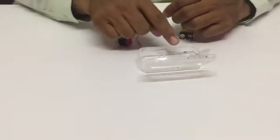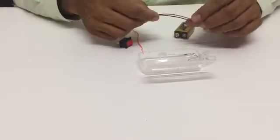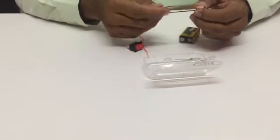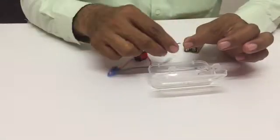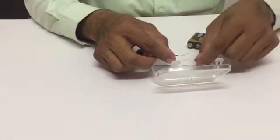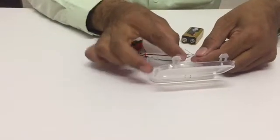After connecting the resistor to the bigger terminal of the LED, use the battery connector. The red wire of the battery connector should be connected to the resistor.